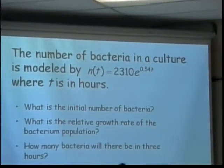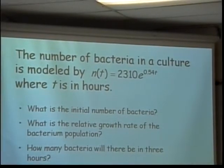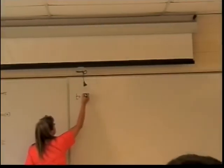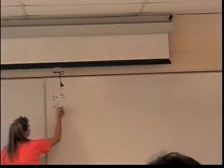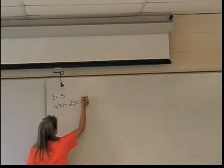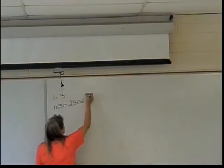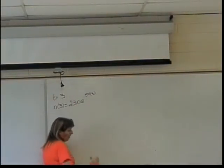How many bacteria will there be in three hours? How can I figure that out? Is it t and 3? Yes. This is when t is 3, so in 3 hours t will be 3, so we plug that in. N of 3 is equal to 2310 times e to the 0.54 times 3, and we calculate that.